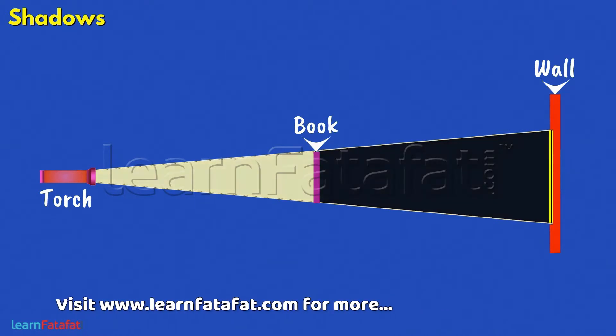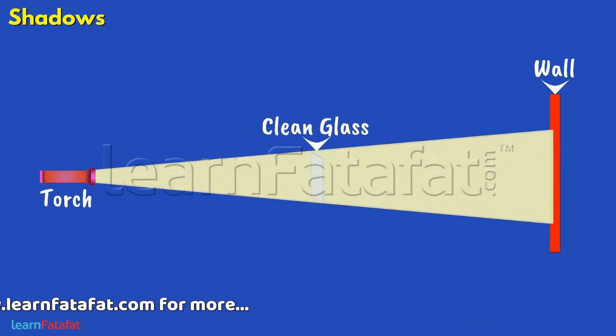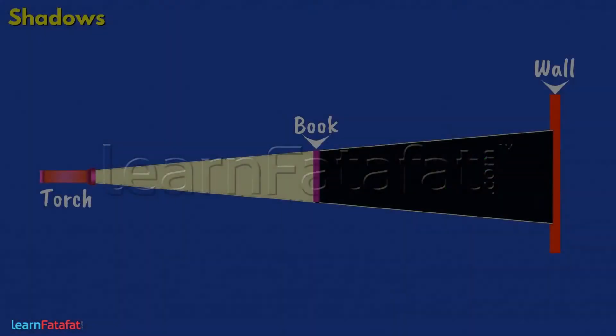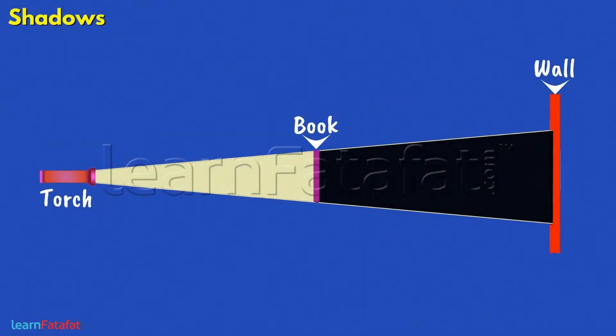Now if we replace the book with a clean glass, would we get shadows in this case? No, it is because the book is an opaque object which does not allow light to pass through it.